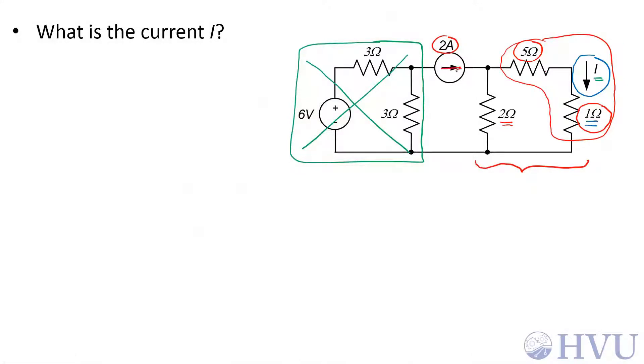So I know the current 2 amps going into a parallel combination of two resistors. I want the current in one of those resistors.